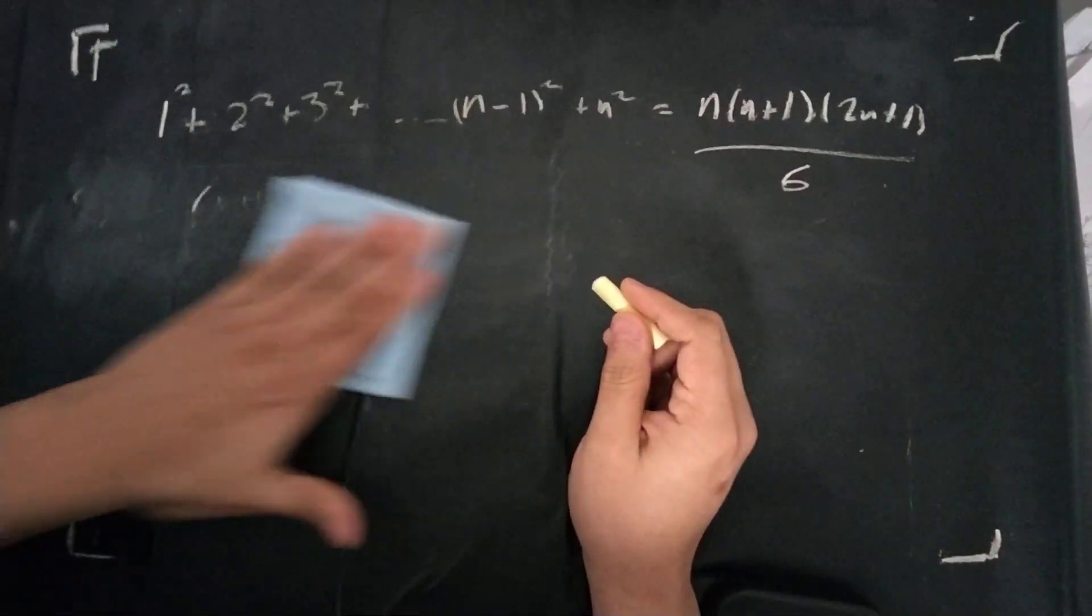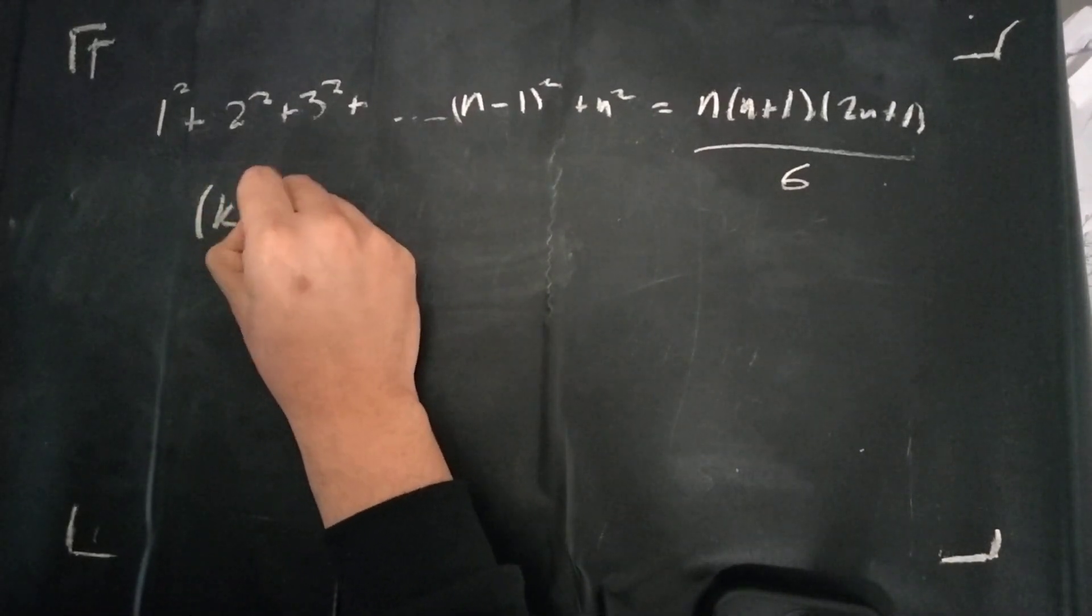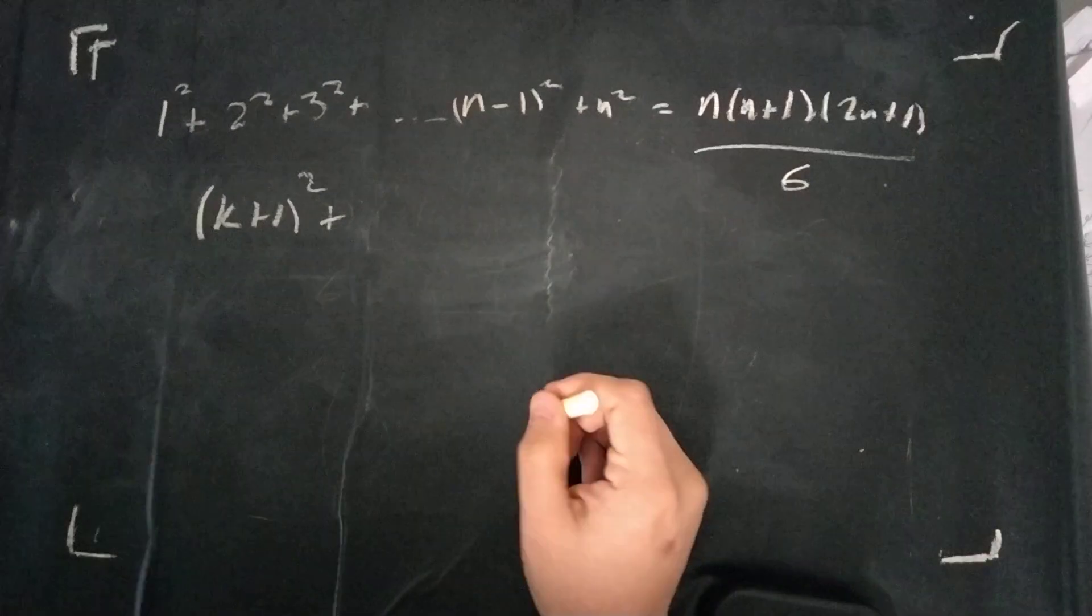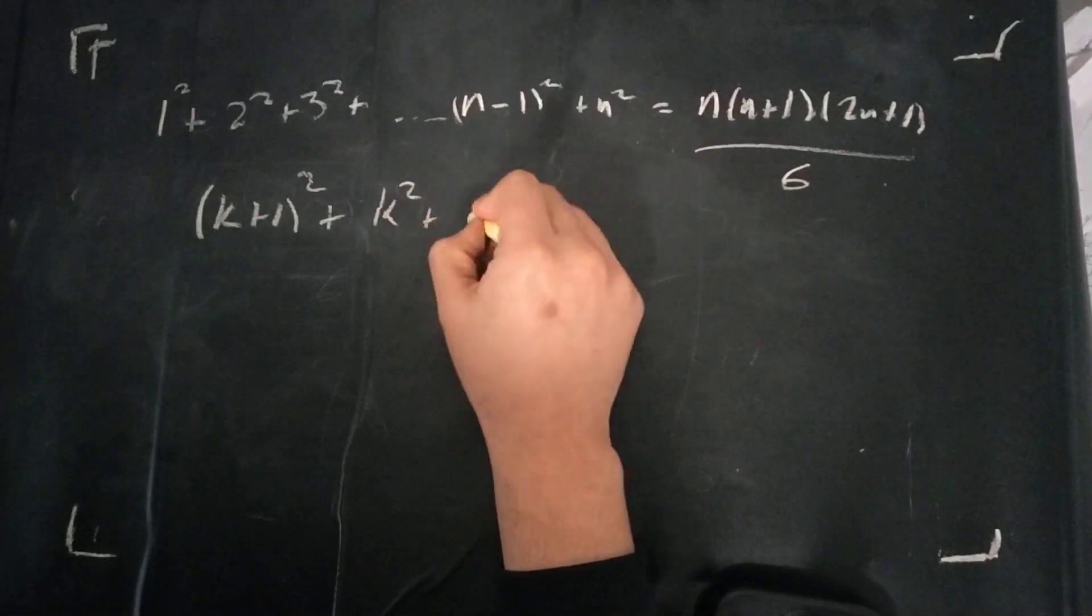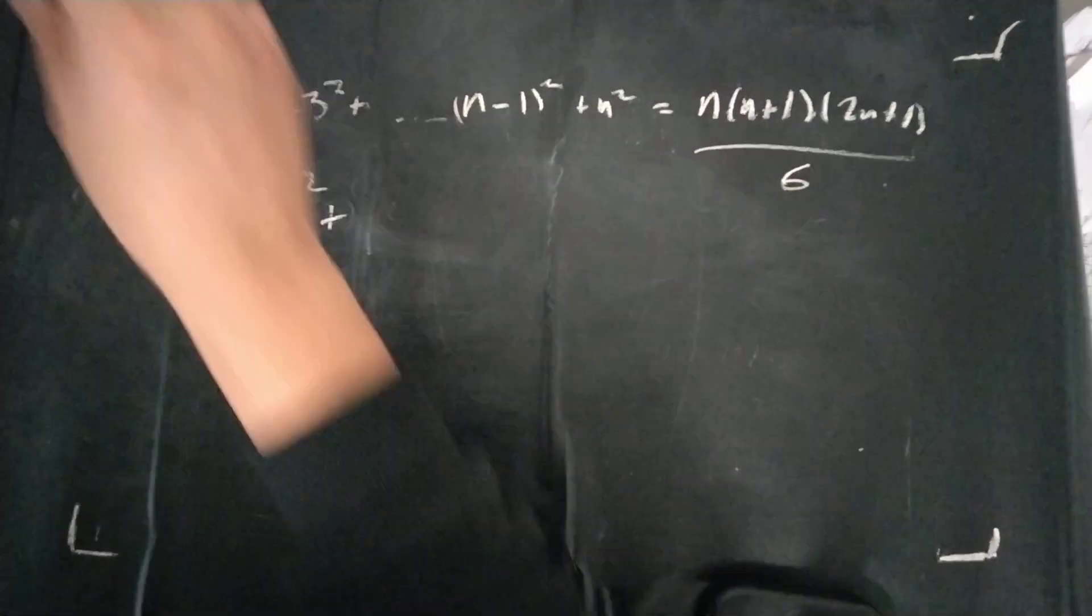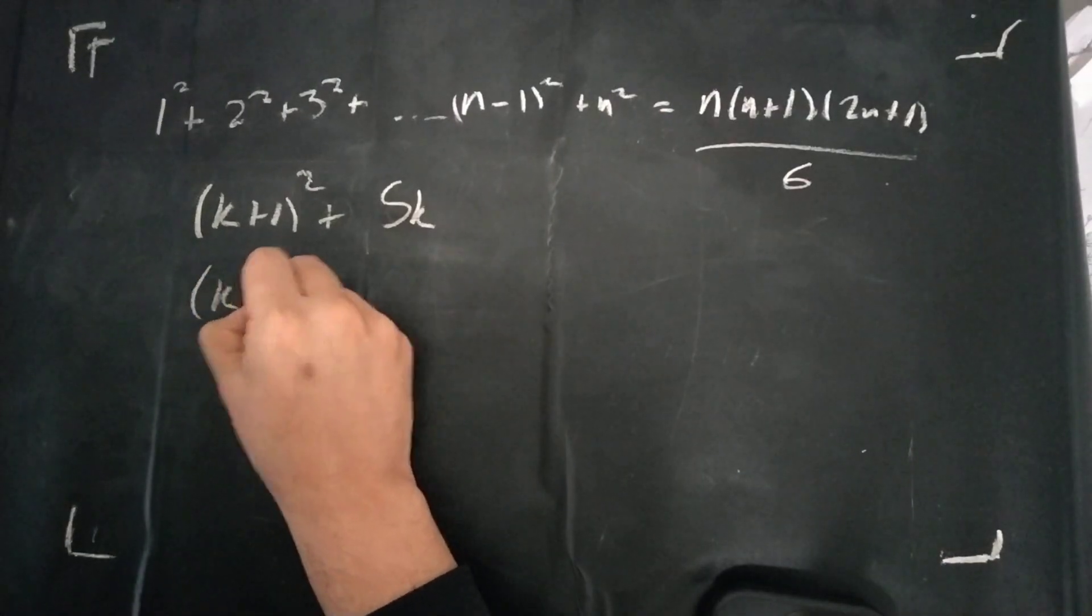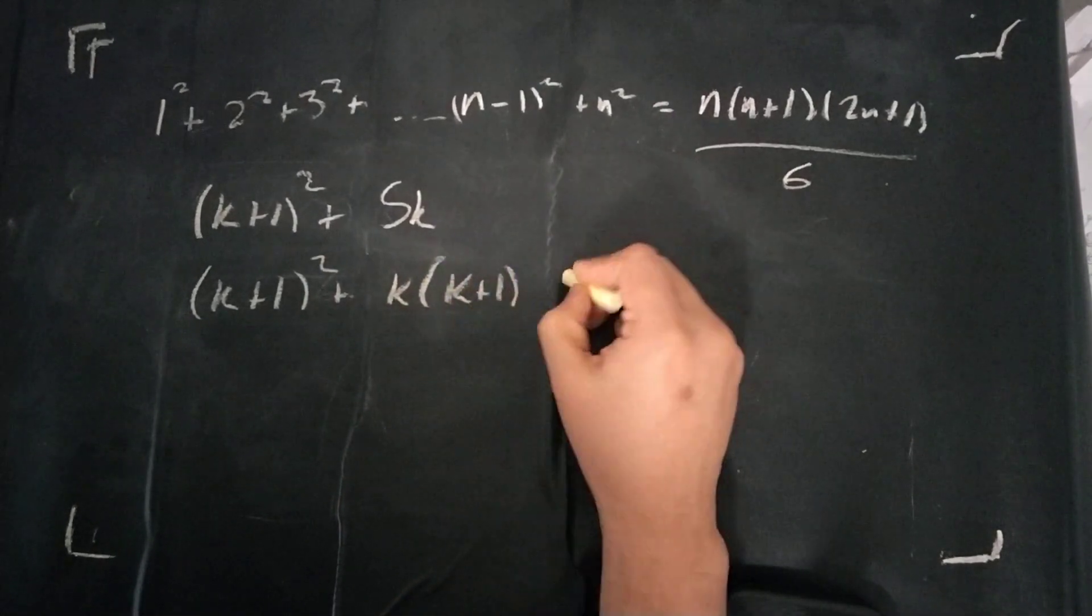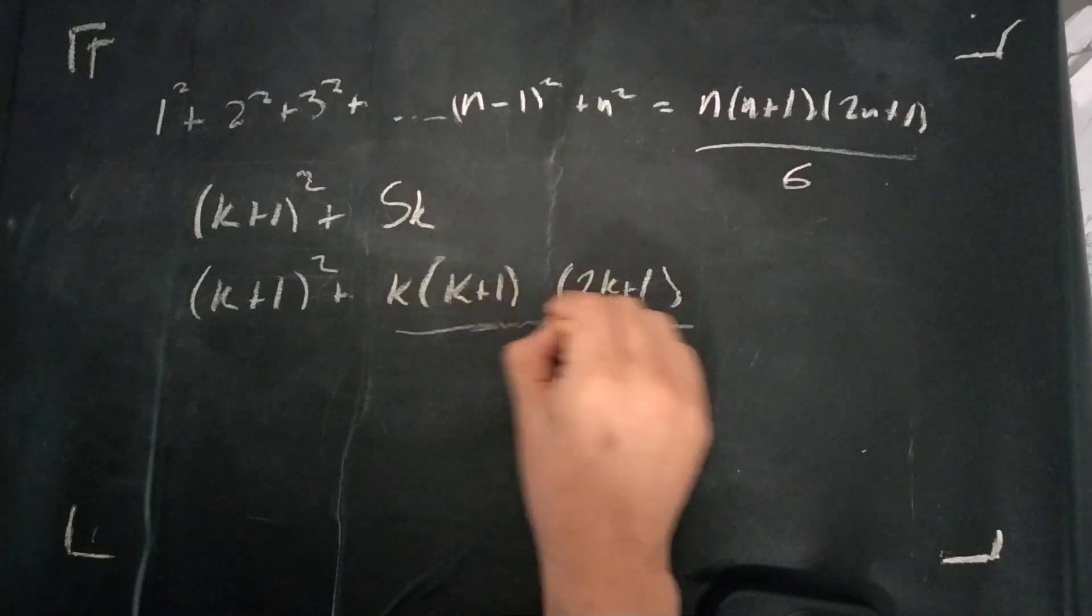And then we can draw this. So, at k+1, k+1 squared, plus, and here's where the first little trick comes about. Because as you can see, this is just k+1 squared plus all of its subsequent terms. So, rather than write it all out, we can instead write plus s of k, which we know already. So this would be (k+1)² plus k(k+1)(2k+1)/6.